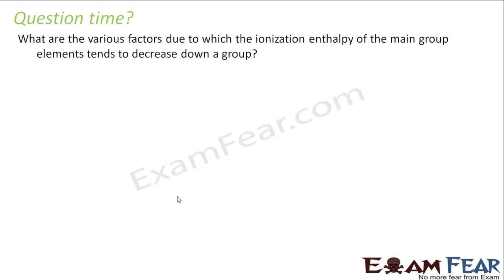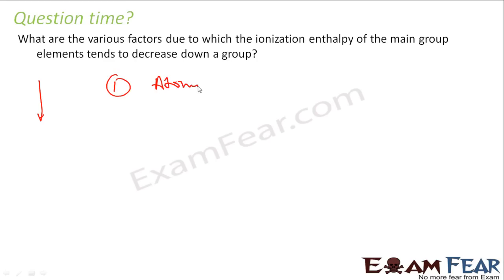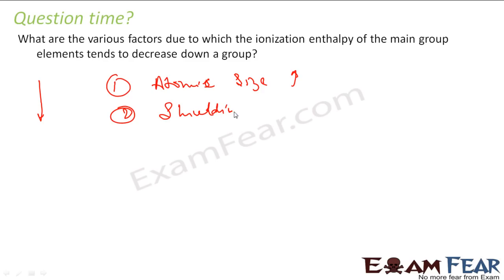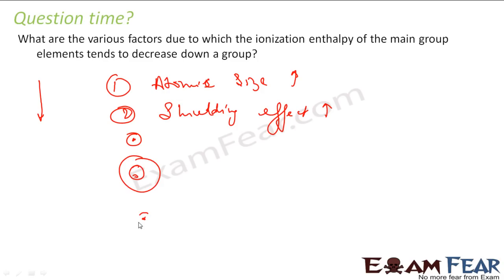What are the factors due to which the ionization enthalpy of main group elements tends to decrease down a group? If you go down the group, ionization enthalpy decreases. The first factor is atomic size increases as you go down the group. The second factor is the shielding effect. Both are responsible for the decrease in ionization enthalpy, because electrons are held less tightly by the nucleus as distance and shielding increase.